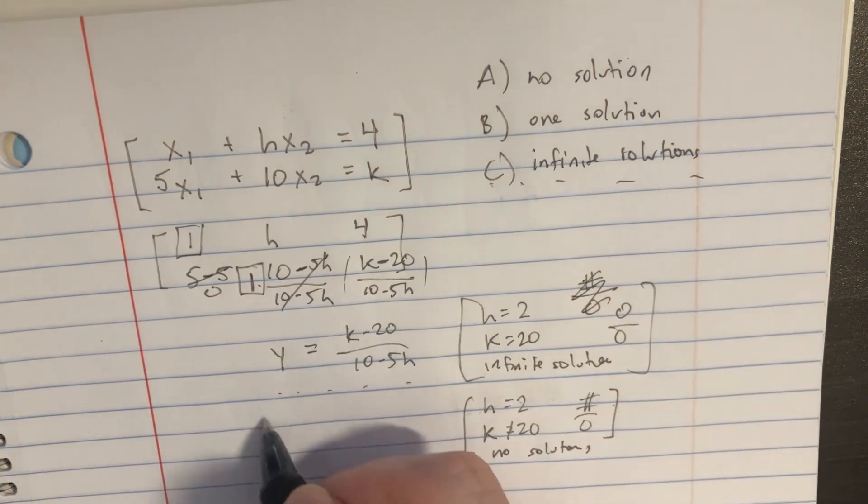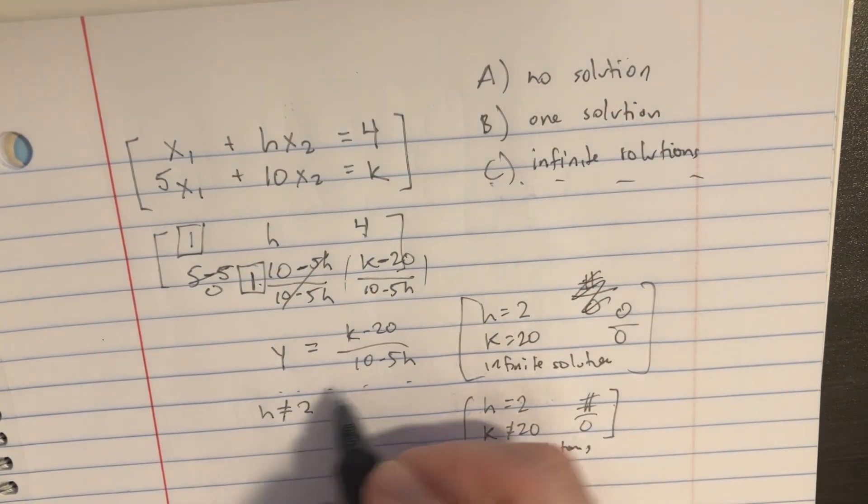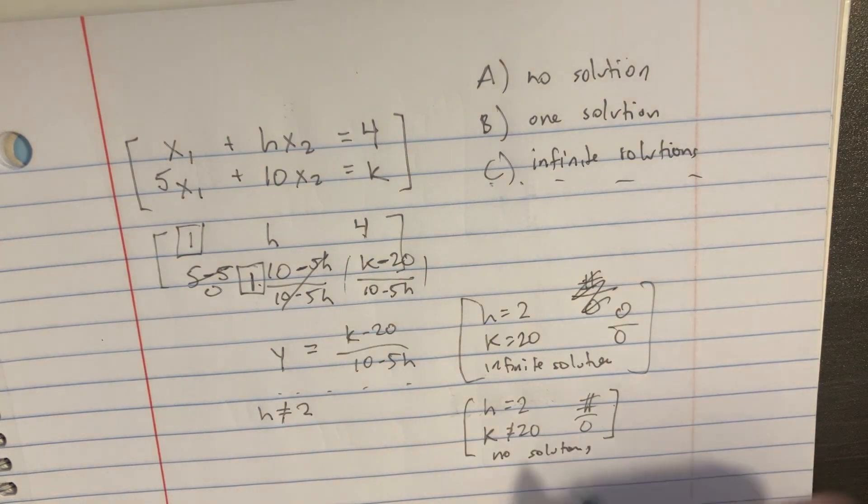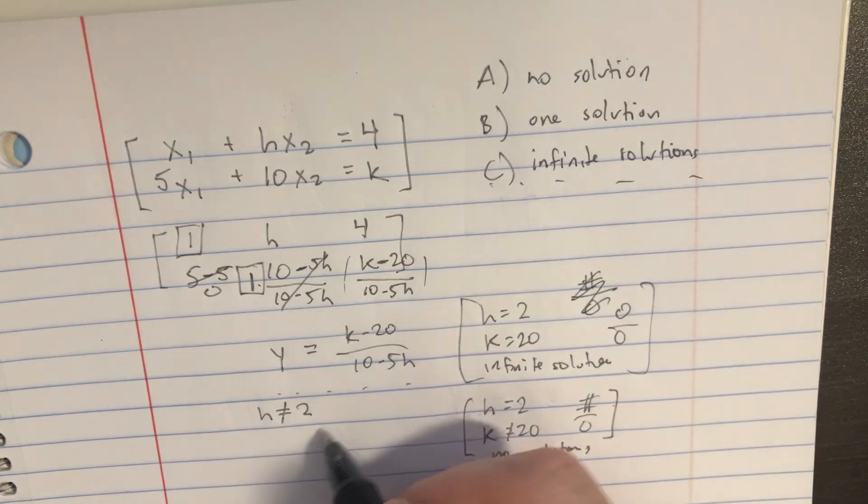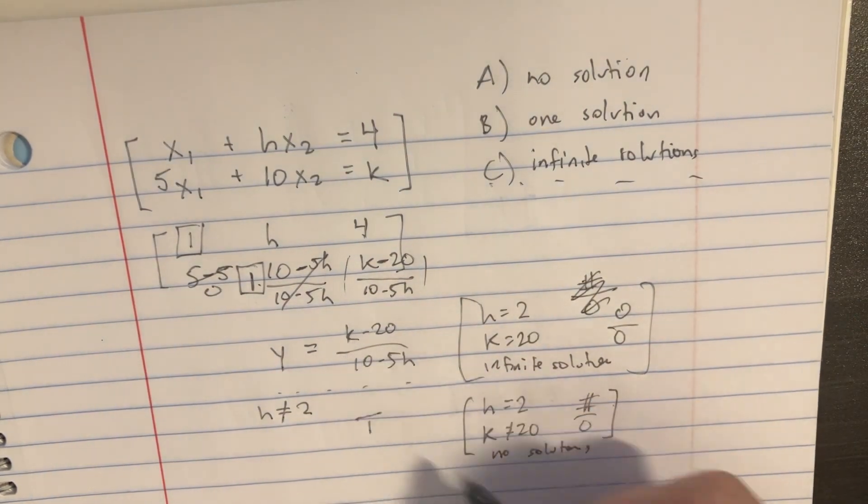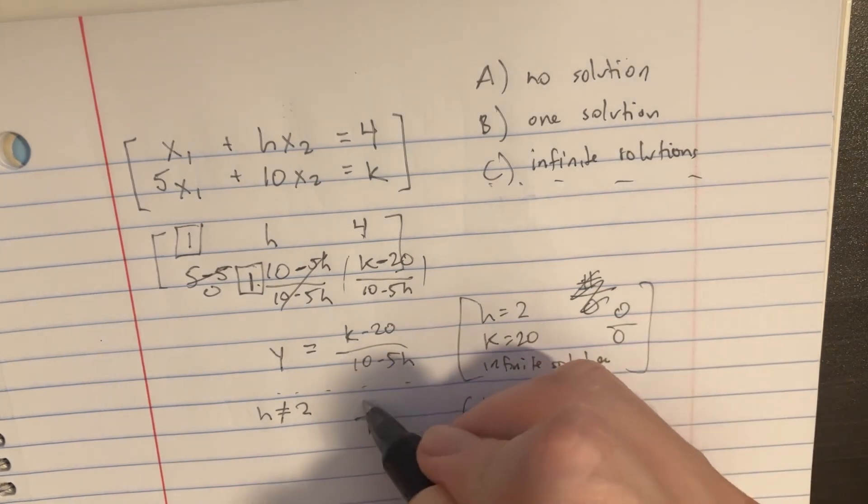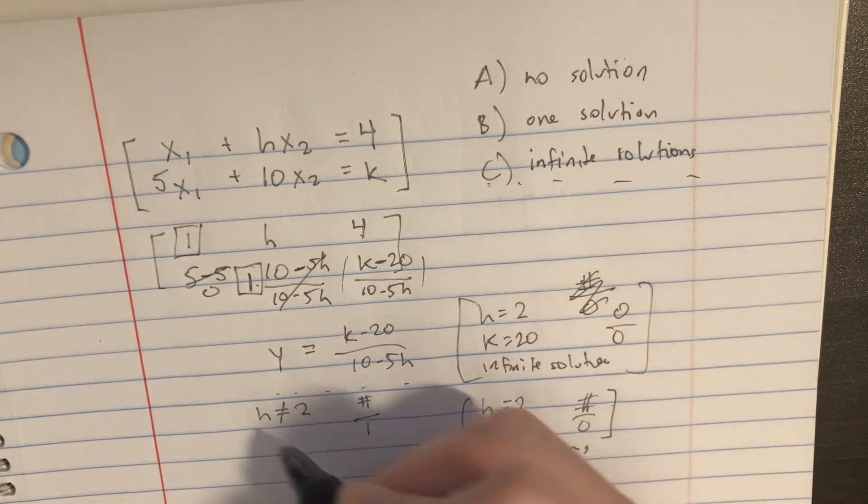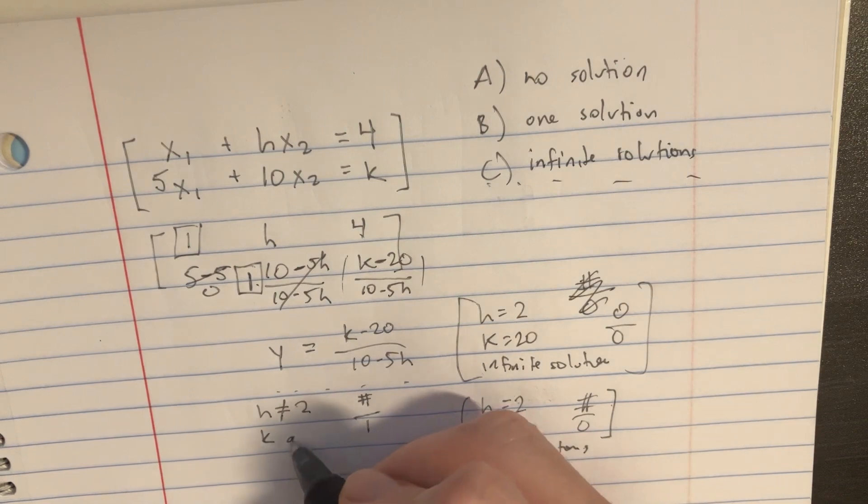And now let's say that h does not equal 2. That means that we'll get something on the bottom, like just say 1. And on the top side, it doesn't really matter what you put in there because you're always going to get some kind of number up here. So k can be all real.